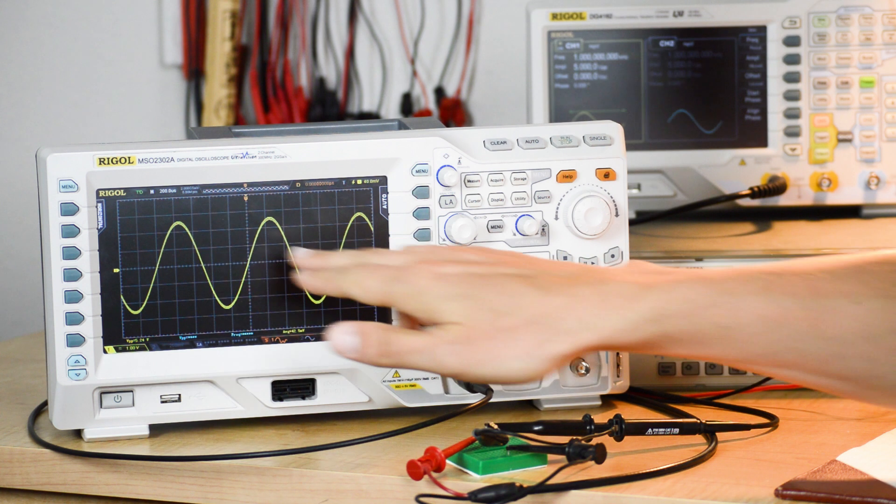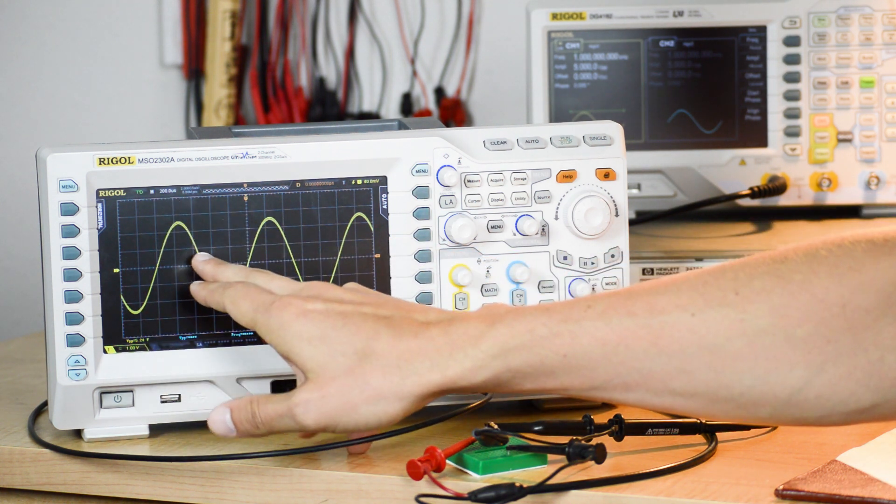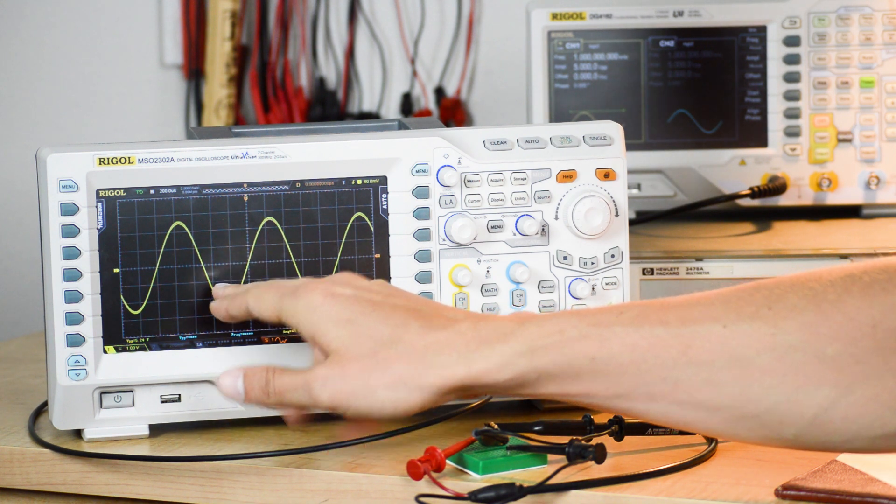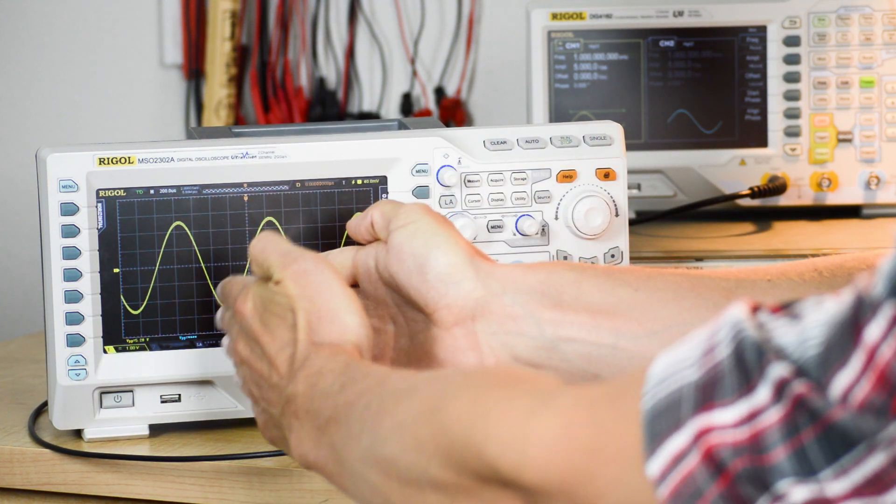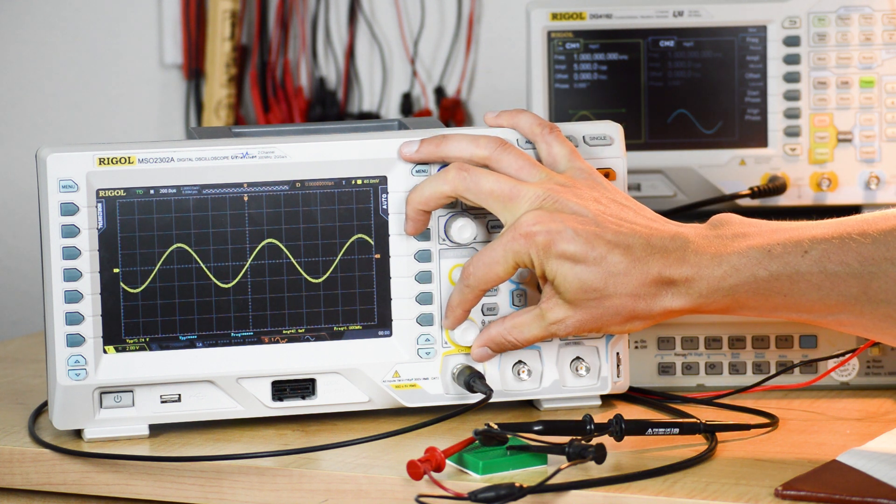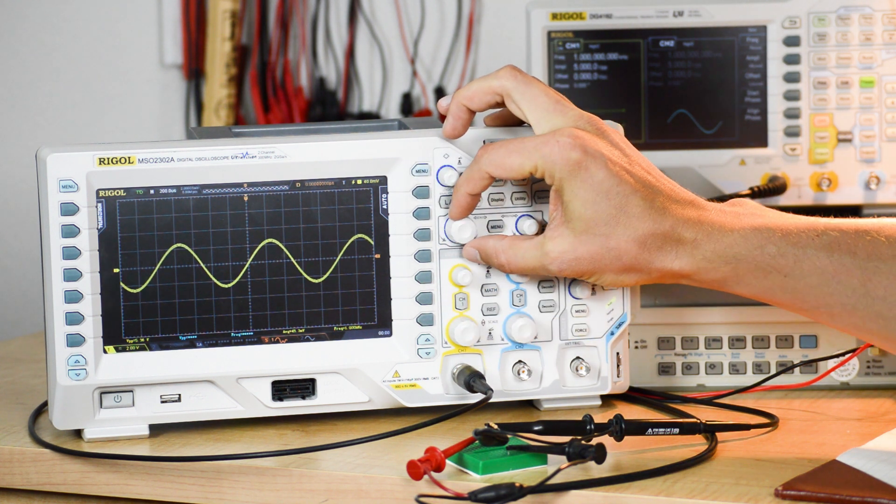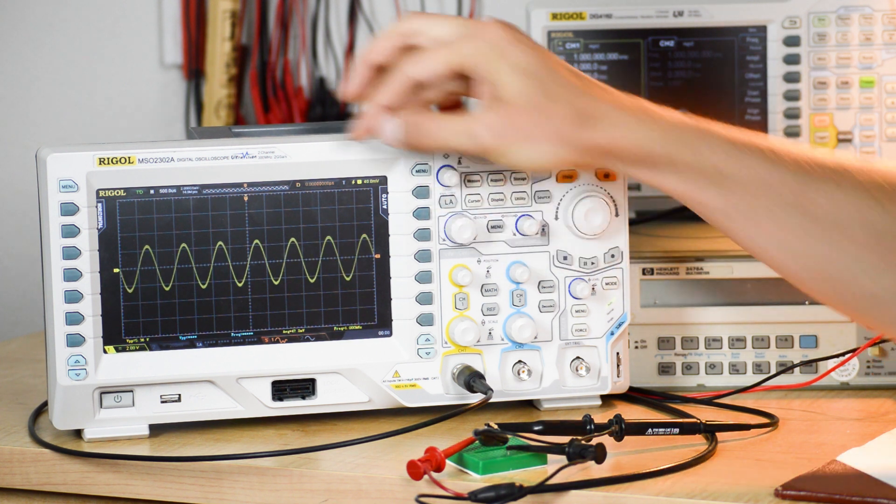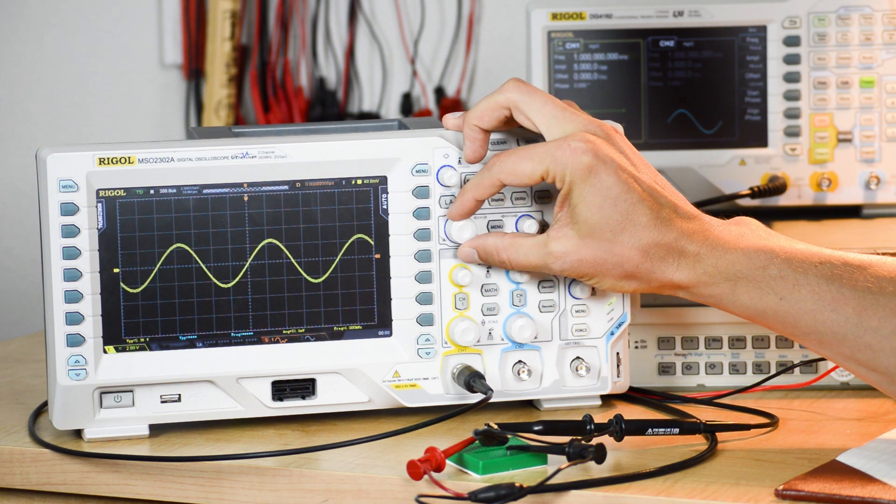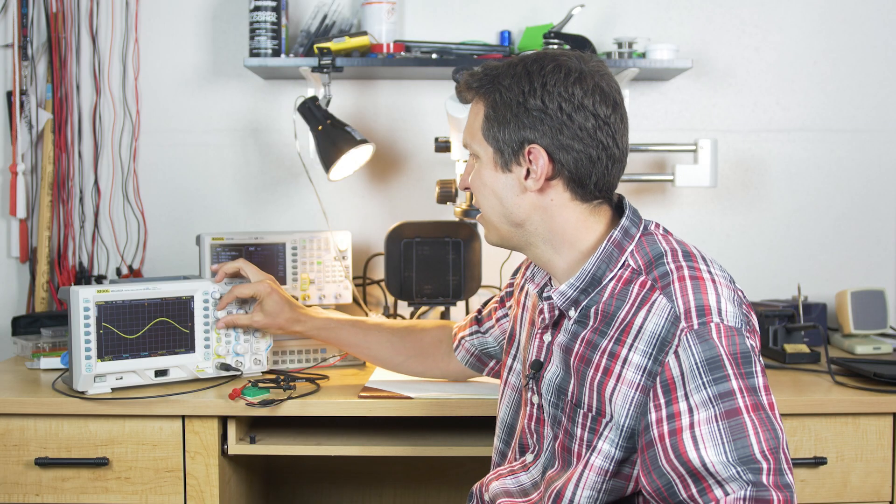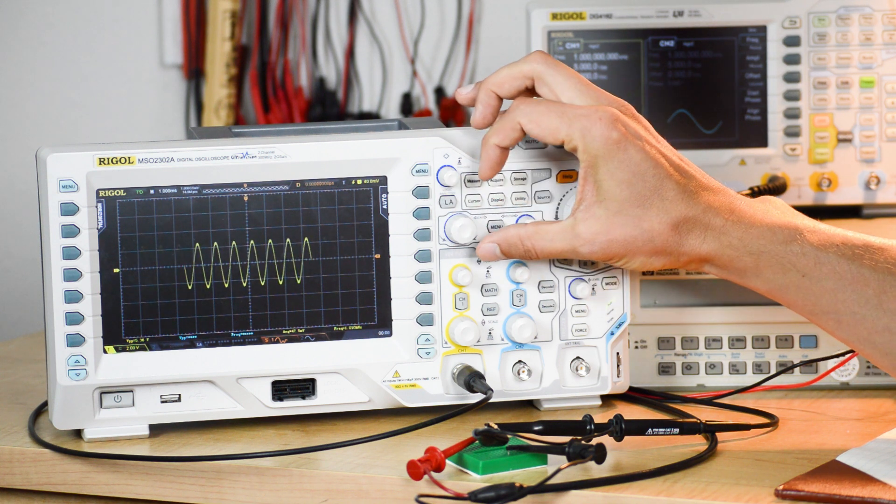One of the first things to look at is the horizontal scale. Right now each division is 200 microseconds. I can change the scale—now it says 500 microseconds. Going back, it's 100 microseconds. You can see as you zoom in and out, it gives you a good idea of what you're looking at.